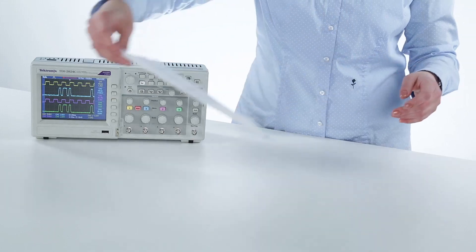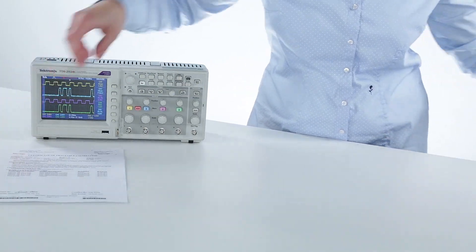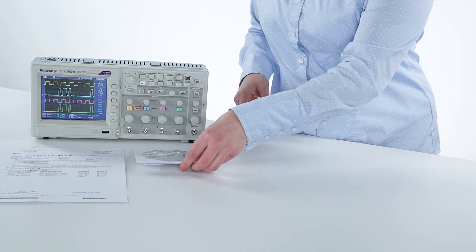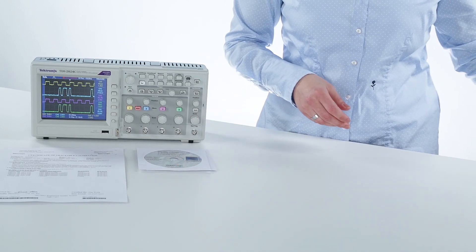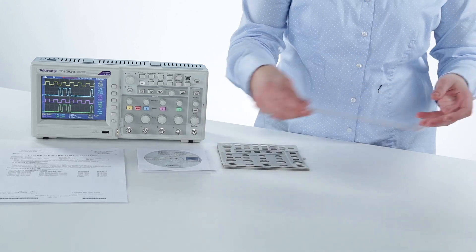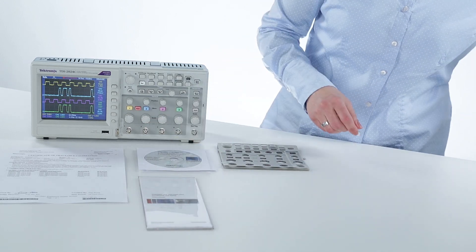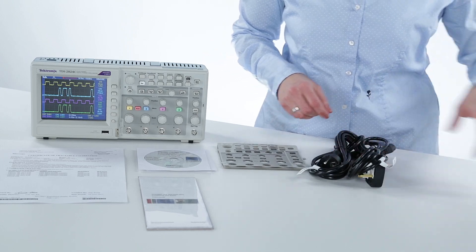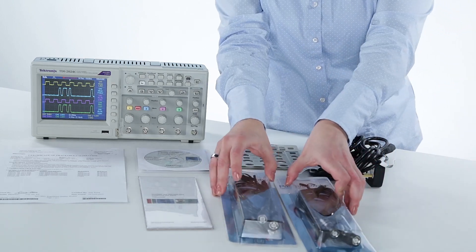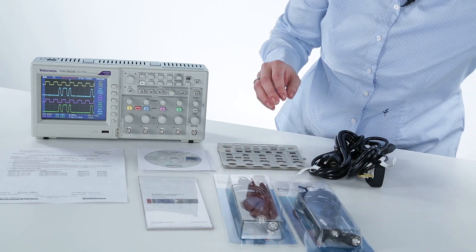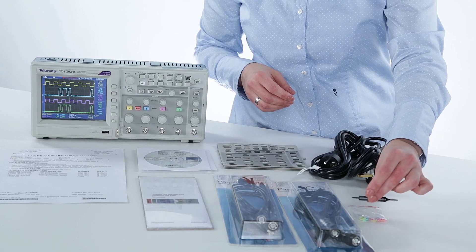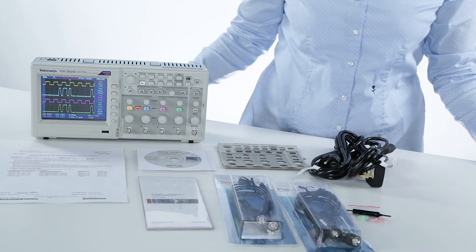Included with TDS2024C is a certificate of calibration, various software for remote control your device, manuals in all available languages and the appropriate front covers, safety instructions, power cords, passive probes with the appropriate bandwidth for all channels, colored markings for your probe tips, and a screwdriver for decompensation.